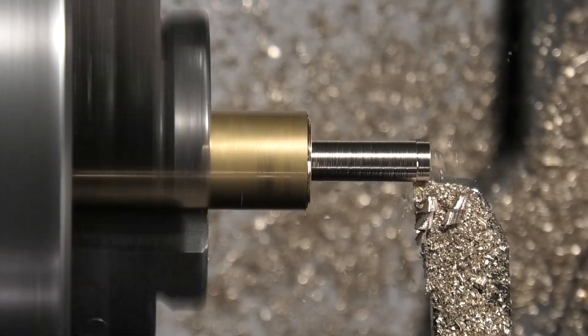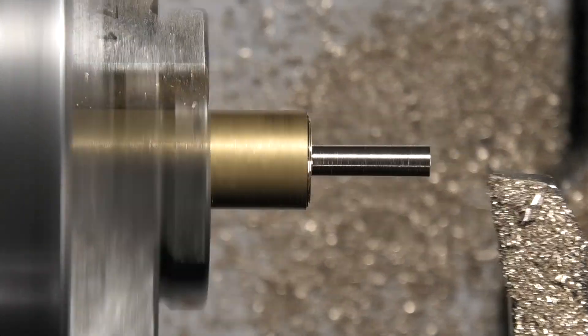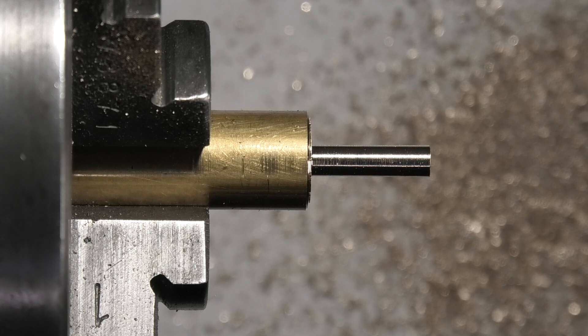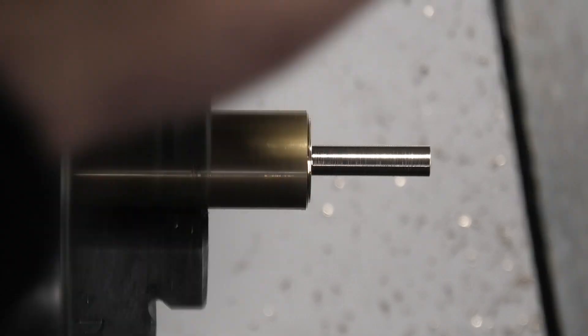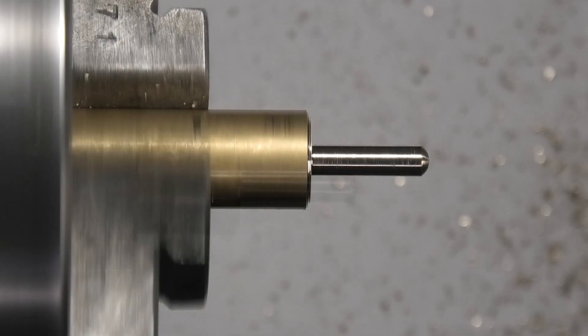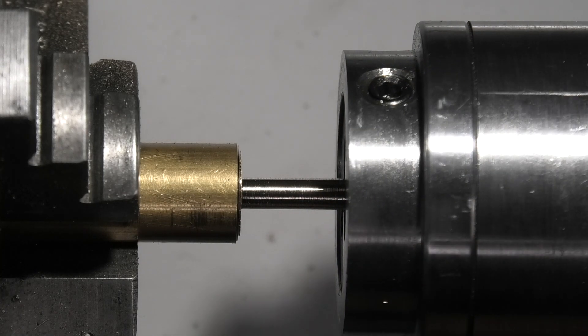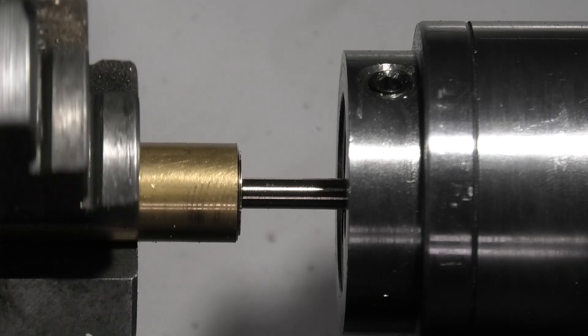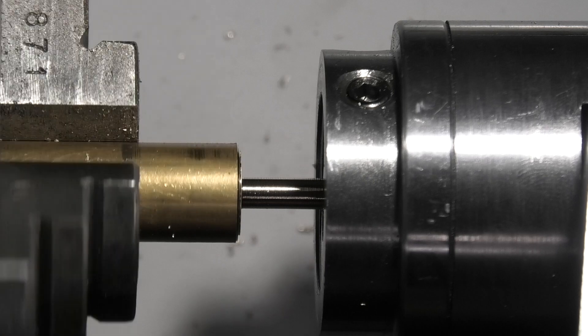Now we're making the clamping screw and I need to turn this down to an M4 thread. 158, leave it at that. So now what I need to do is put a start for the thread. I'm just going to file the dome on the end. I have just put my four millimeter die in the die stock. Bring it up to the part, turn it on slow. Wind it in.